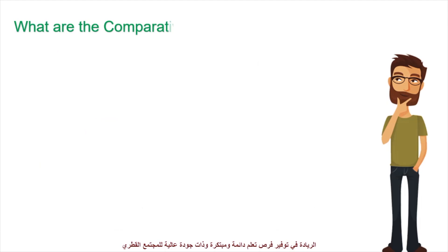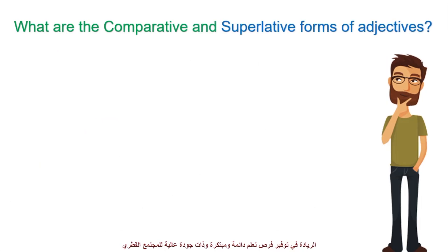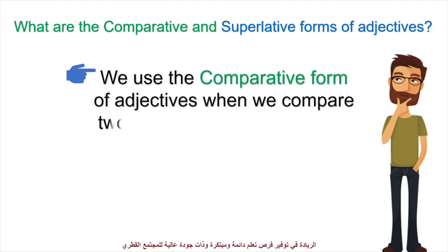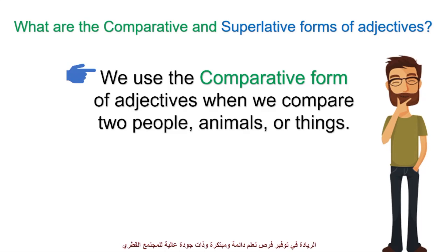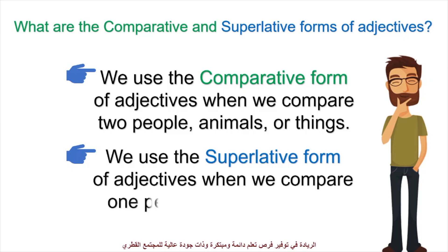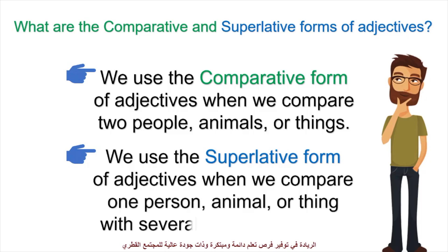What are the comparative and superlative forms of adjectives? We use the comparative form of adjectives when we compare two people, animals, or things. On the other side, we use the superlative form of adjectives when we want to compare one person, animal, or thing with several of the same kind.